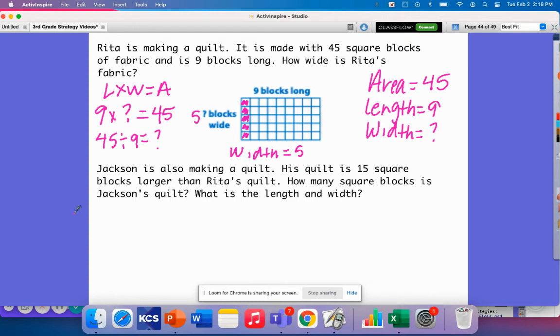Now it says Jackson is also making a quilt. His quilt is 15 square blocks larger than Rita's quilt. How many square blocks is Jackson's quilt? What is the length and the width?